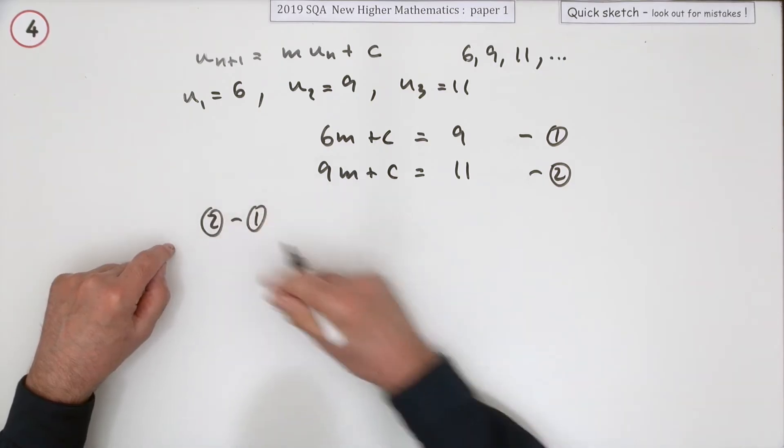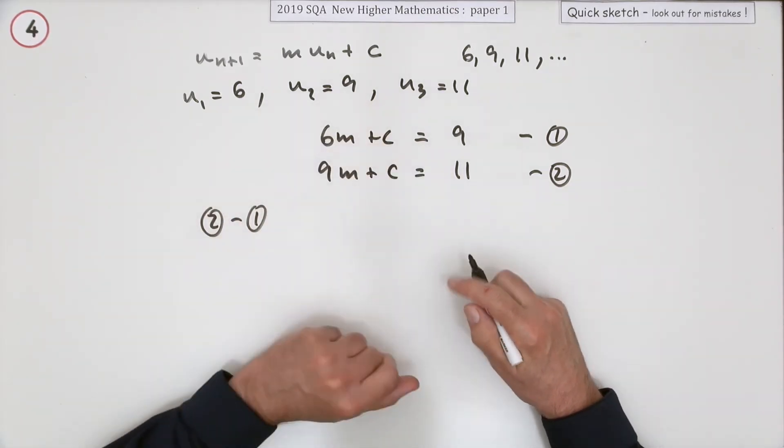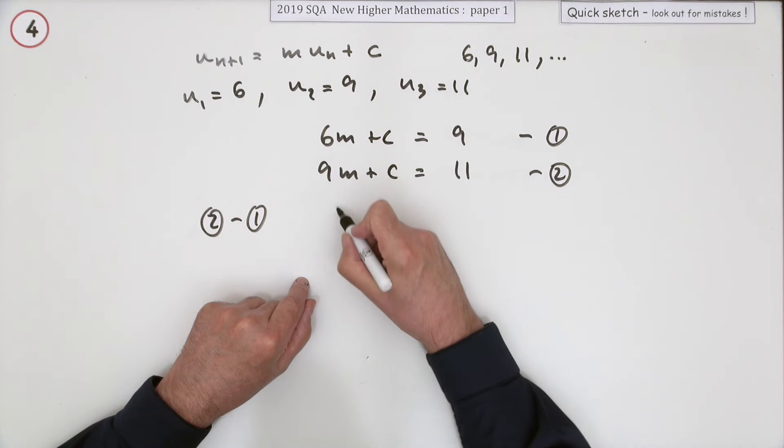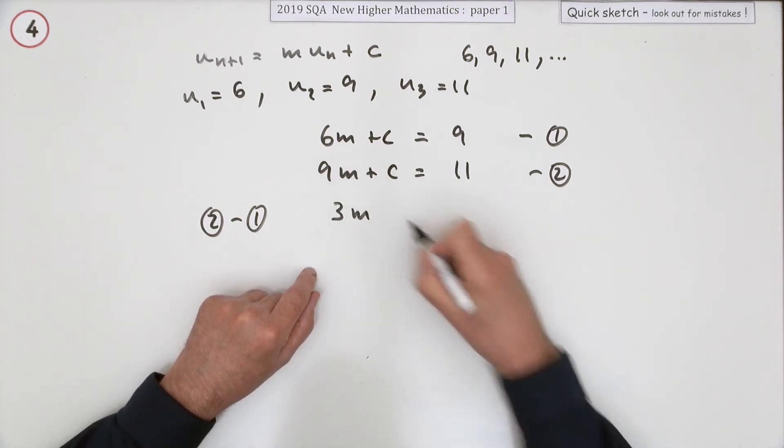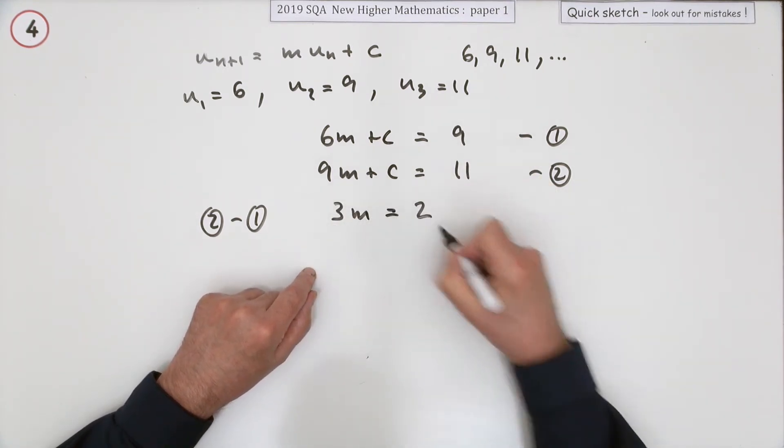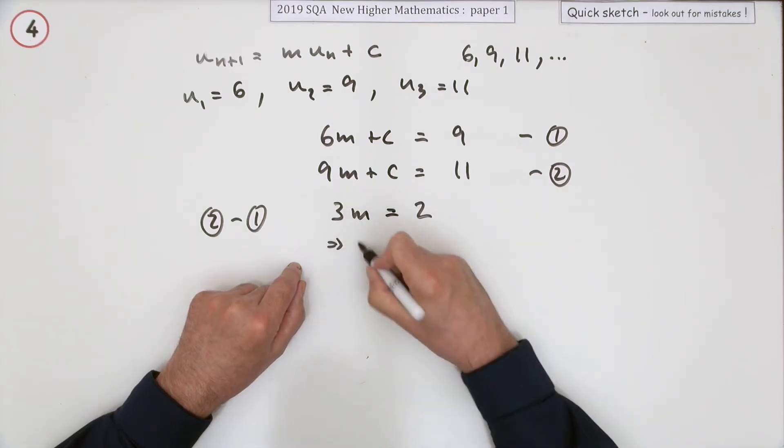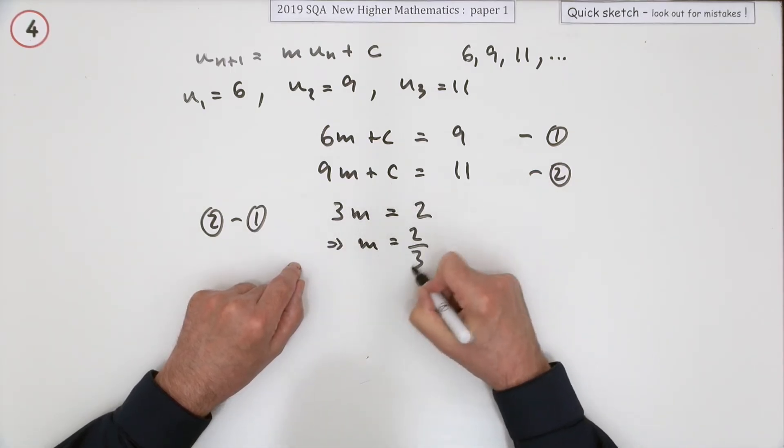So I think we'll just do equation 2 minus equation 1 because subtracting them will get rid of those C's. 9 minus 6 is 3M. 11 minus 9 is 2, which means M equals 2/3.